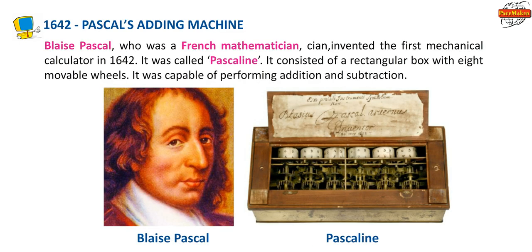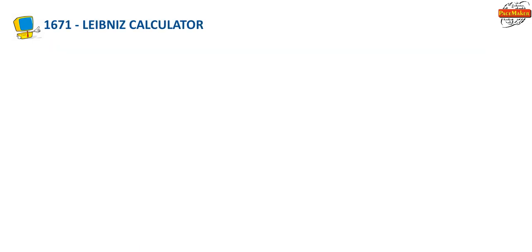1642 — Pascal's Adding Machine: Blaise Pascal, who was a French mathematician, invented the first mechanical calculator in 1642. It was called Pascaline and consisted of a rectangular box with eight movable wheels. It was capable of performing addition and subtraction.